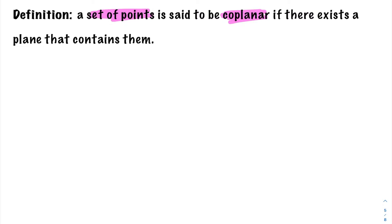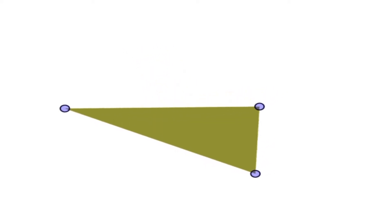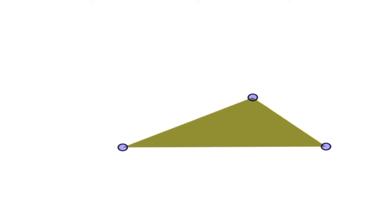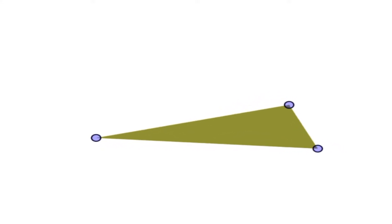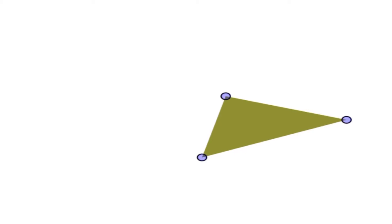Let's take a look at a visual to aid us in our definition of coplanar. If you have three points, they're always going to be coplanar because three points will generate two direction vectors that'll generate your plane. So three points are always considered to be coplanar, because those three points always exist on a plane — the plane generated by the two direction vectors you can create from those three points.